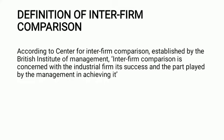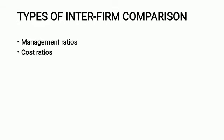its success and the part played by the management in achieving it. Let us focus on the types of Interfirm Comparison. The first type is Management Ratios. Management ratios are those which are linked to sales, profits, and assets of business. These ratios are meant to provide management, in a nutshell, a comparative picture of its operating performance,